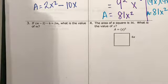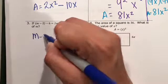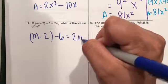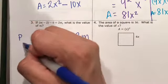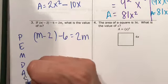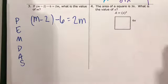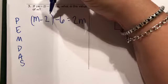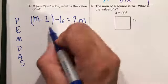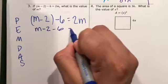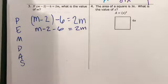It says if m is minus 2, and that's in parentheses, minus 6 equals 2m, what is the value of m? So we're going to say m minus 2, minus 6 equals 2m. So we're going to look at order of operations, or PEMDAS, to answer this. Parentheses, there's nothing that can be combined, so we're going to take away the parentheses. So we're going to say m minus 2, minus 6 equals 2m.